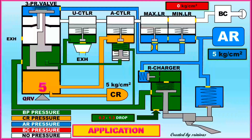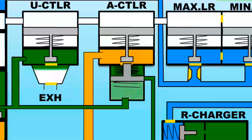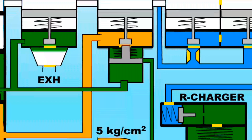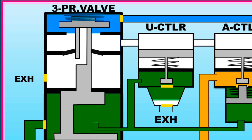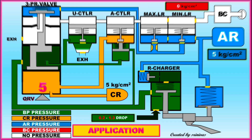At the same time, the connection between BP and CR is disconnected through the A controller. Also, the stem of the 3-pressure valve goes up and AR pressure connects to BC.